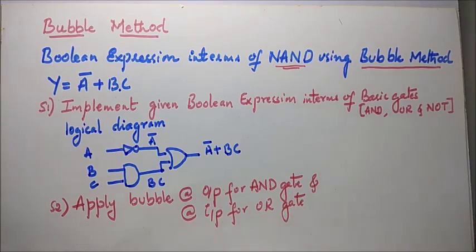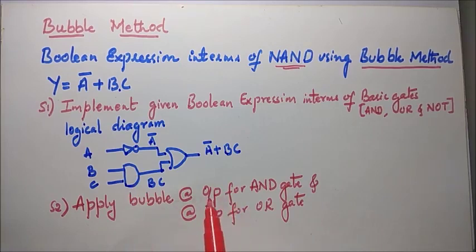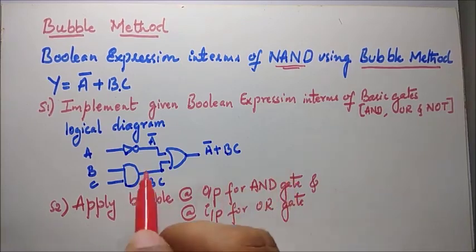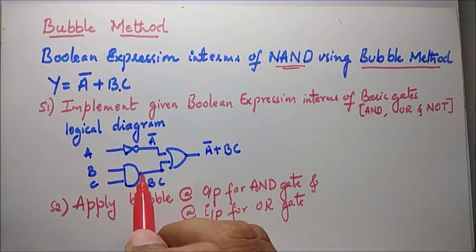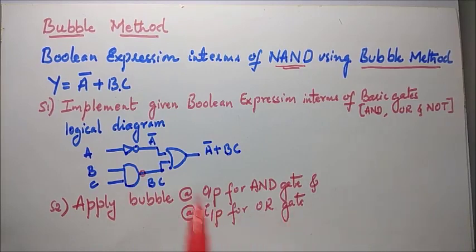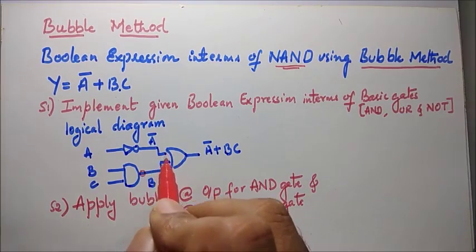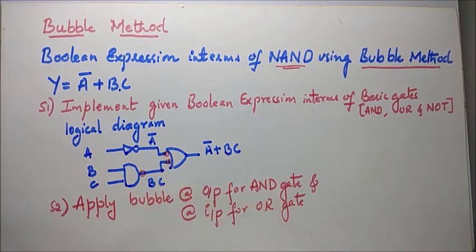Let's do that. Here we have a single AND gate, so according to step two I apply a bubble at the output of the AND gate. Similarly, for the OR gate I apply bubbles at its inputs. This completes step number two.